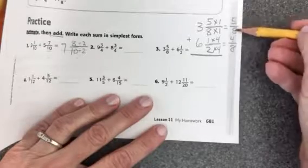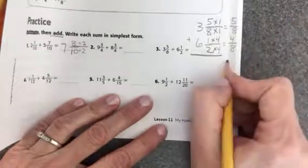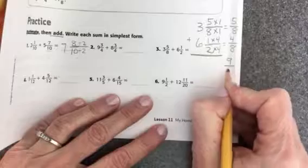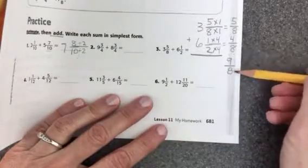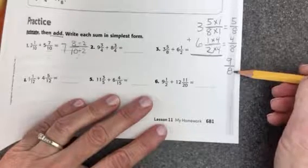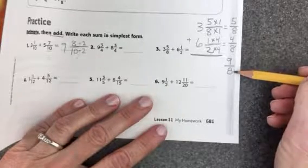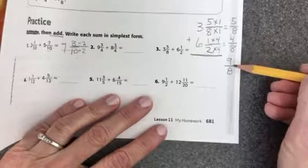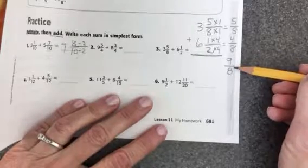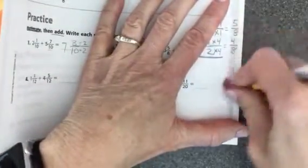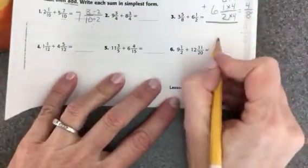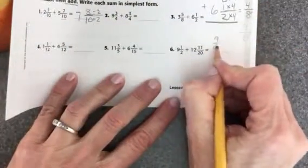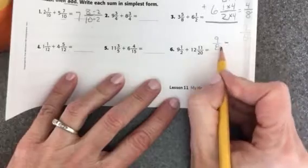Now I'm going to add 5 eighths plus 4 eighths. Oh that equals 9 eighths. So here I have 9 eighths. Oh students, when the numerator is larger than the denominator, that's an improper fraction. But that means I have more than a whole in here. So I'm going to take that 9 eighths. I'm actually going to slide it over here a little bit. I have that 9 eighths. And I'm going to take out a whole.